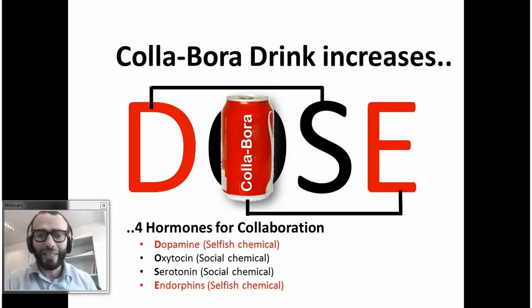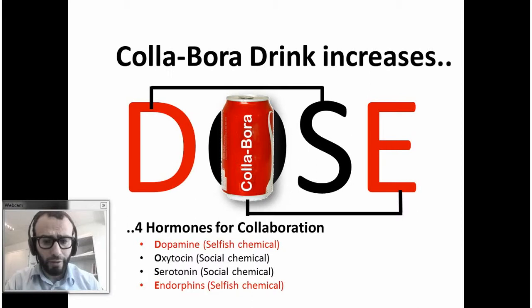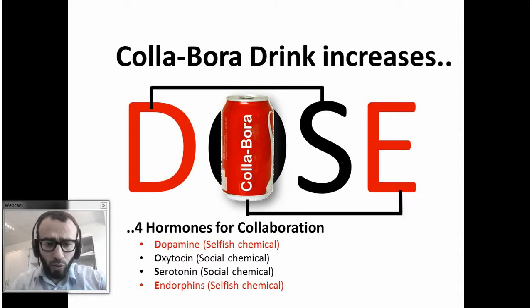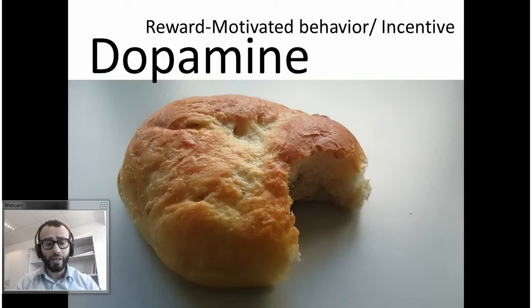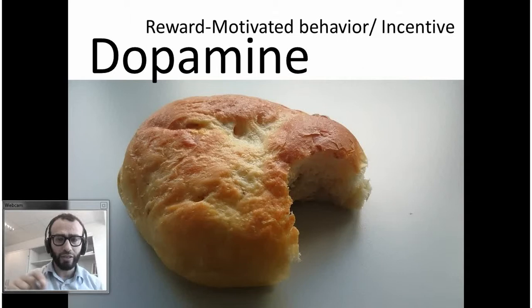Colabora drink increases four hormones which are responsible for supporting collaboration. This is the first letter from each: Dopamine, Oxytocin, Serotonin, and Endorphins — two of them related to selfish chemicals and two to social chemicals. Dopamine means reward-motivated behavior and incentives. Incentives are a very important aspect to ensure collaboration. As researchers, we cannot collaborate until we have a benefit from the collaboration. It is like finishing a task on your to-do list and crossing it out and saying 'yes, I finished it!' — that kind of feeling is what dopamine tries to do.